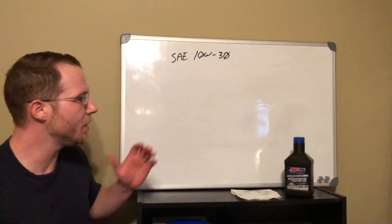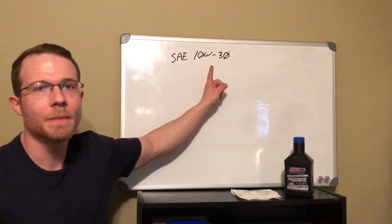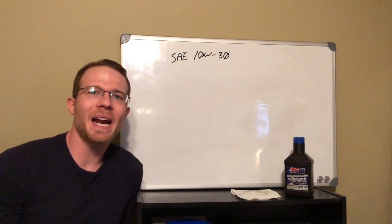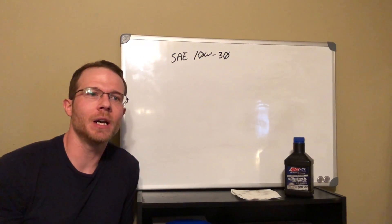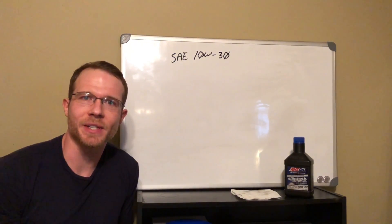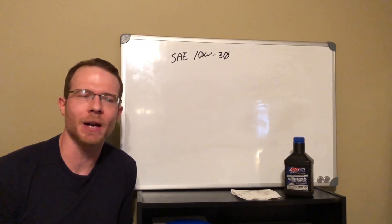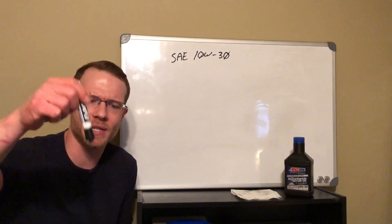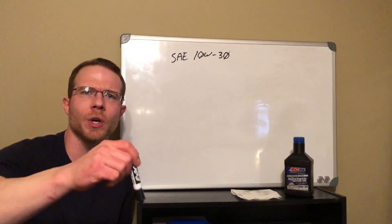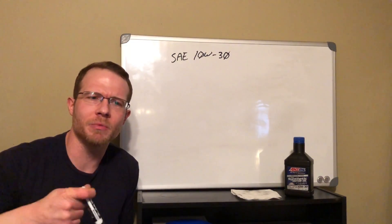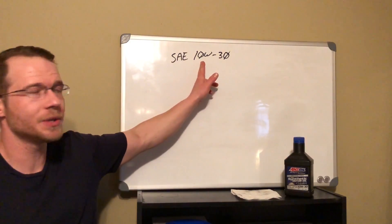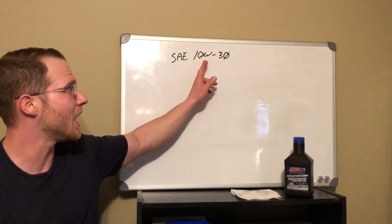So one important thing to note is that these numbers, 10 and 30, they are not actual viscosity measurements. Those would be like millimeters squared over seconds, flow rates, or resistance rates when you stick a metal rod in there and try to stir. There would be a measurement of resistance or flow. These are just the numbers that the SAE has assigned.